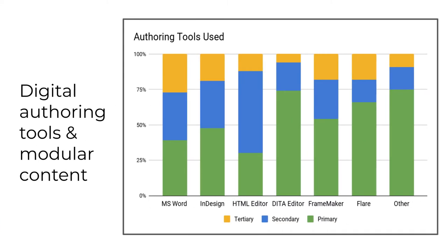Let me remind you of the results from this 2016 survey. These are the authoring tools that TechCom Pros told CIDM they were using in 2016. The most commonly used tools — DITA or XML, Flare, and some versions of FrameMaker — all support modular content. In fact, many of these tools support publishing content in a database, often referred to as a knowledge base, rather than in anything resembling a document.